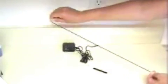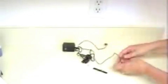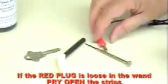To give more flexibility, split the two wires apart. Place the red plug into the end of the wand. The plug should fit tightly to make a good electrical connection. If it is loose, pry open the strips to tighten the plug.